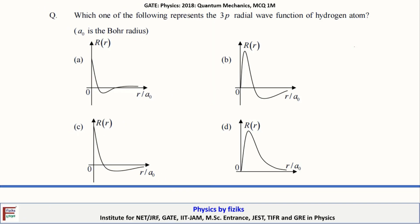We are discussing the GATE Physics 2018 quantum mechanics problem. Here is a one-mark MCQ problem. The statement is: which one of the following represents the 3P radial wave function of hydrogen atom, where A-naught is the Bohr radius?